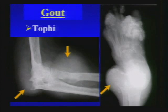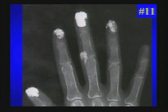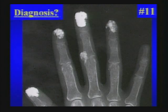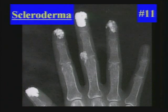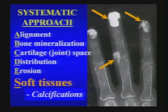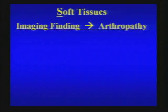Sometimes gouty tophi calcify — a characteristic appearance. Here, another type of calcification affecting the acral regions with some soft tissue loss distally — scleroderma. This brings up soft tissue calcifications and how they can help limit a differential diagnosis or make a specific diagnosis.